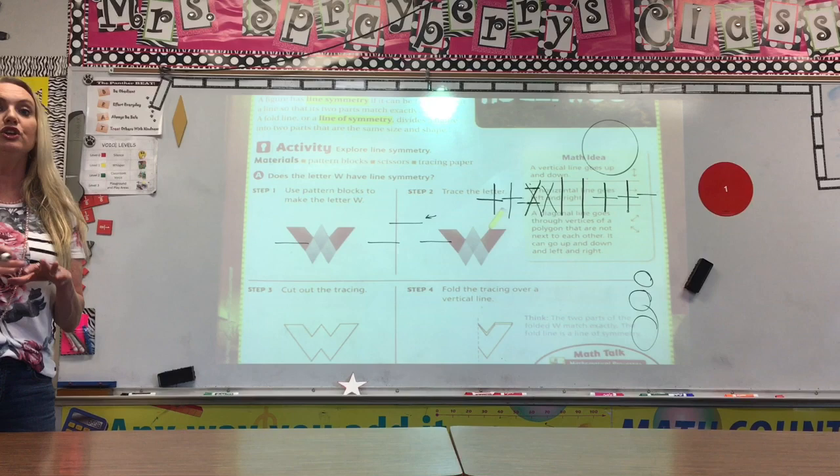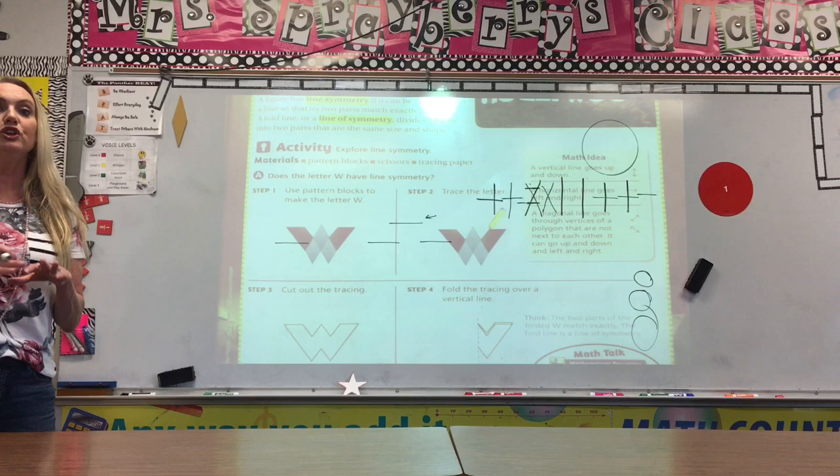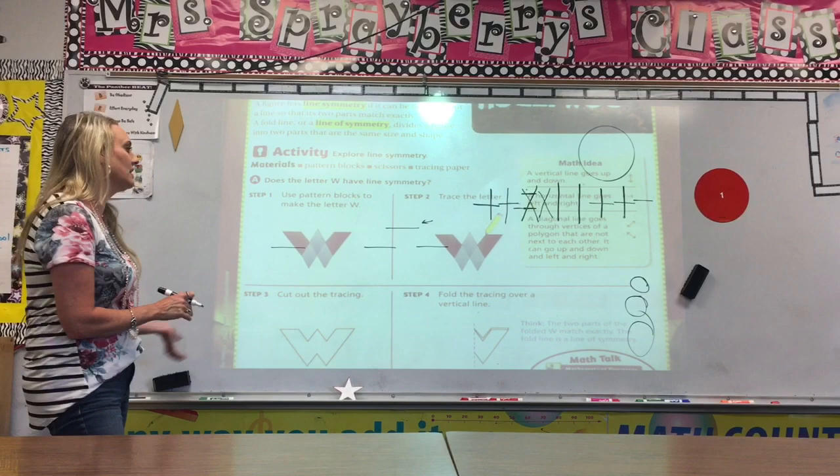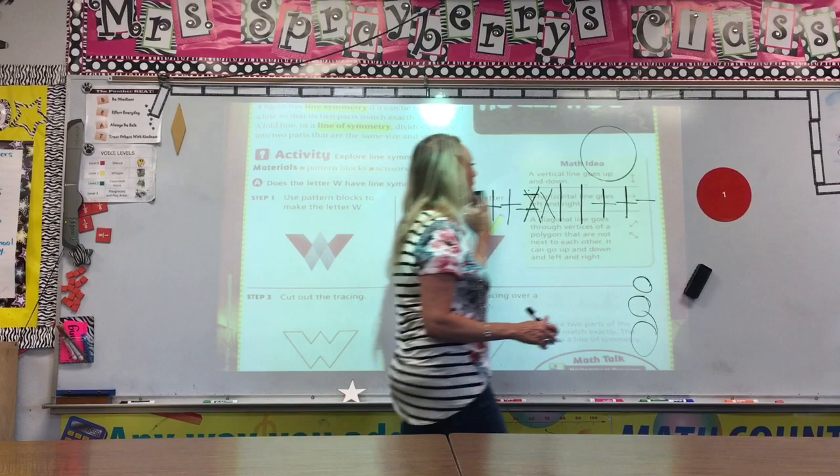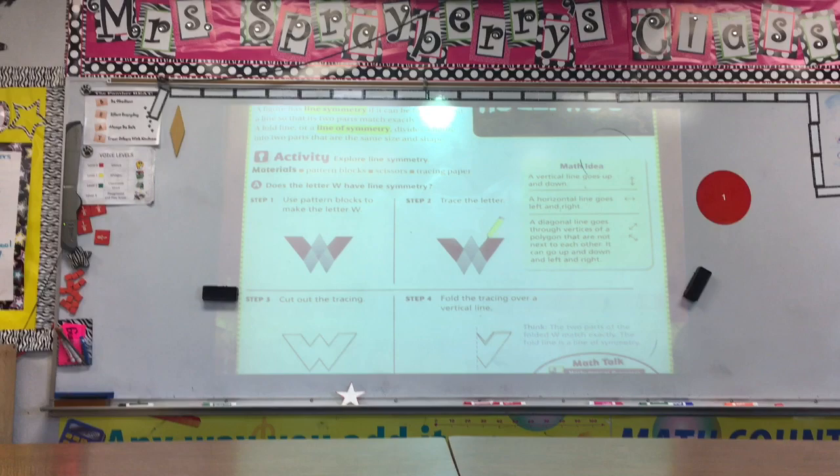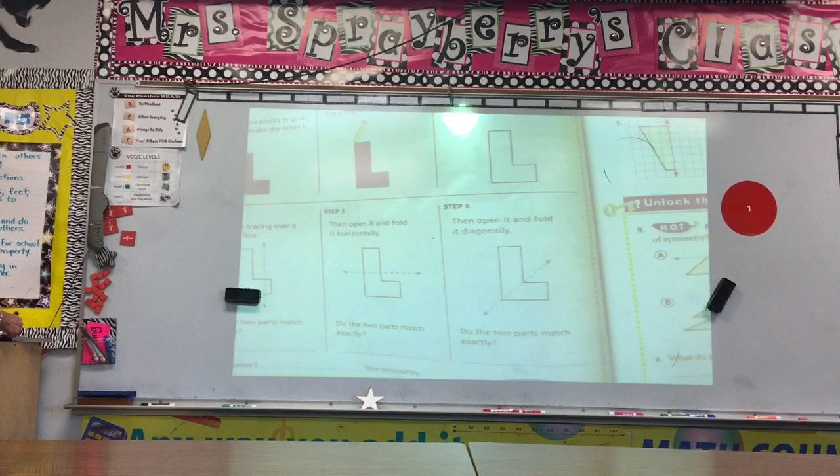Now, the activity with the light bulb shows you that you could take paper, you can make any shape or any letter, and you can practice folding it in half to see if it has lines of symmetry. So they suggest a W. That is really hard to draw and cut out. You might want to think of something a little bit easier to do. But if you have time, I do want you to trace something at your house and see if it has a line of symmetry.